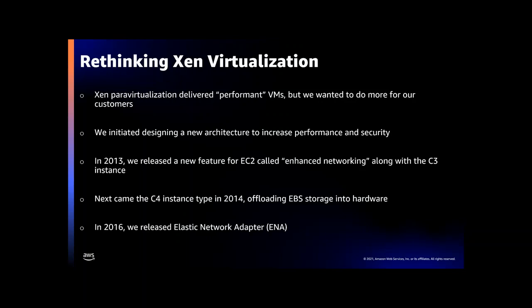In 2013 we took the first step, launching C3 instances with enhanced networking, dedicating Intel 82599 PCI functions to VMs to provide direct network access. Using DMA, network packets could be moved directly to or from guest memory, avoiding interrupts and context switches. Then in 2014 with the C4 instances, we did something similar for block storage by moving the EBS data path into dedicated hardware. And then in 2016 with the X1 instances, we started to provide our own networking hardware with the introduction of the Elastic Network Adapter, or ENA.